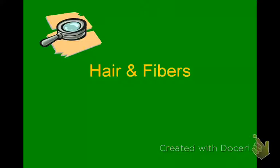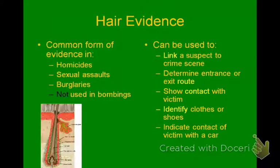Hair and fibers are examples of trace evidence, and they can get kind of complicated. We'll start with hairs. They're a common form of evidence in homicides, sexual assaults, and burglaries. They're not used in bombings because hair is flammable and generally would be destroyed — same with fibers. Hair can be used to link a suspect to a crime scene, determine entrance or exit route, show contact with the victim, identify clothes or shoes, or indicate contact between a victim and a car.